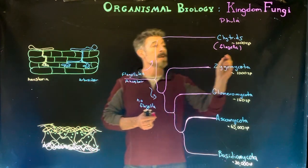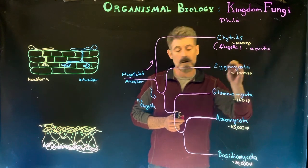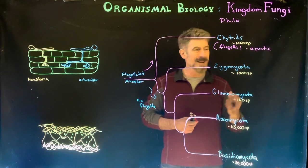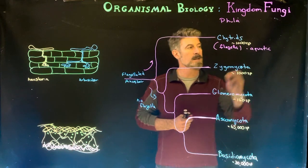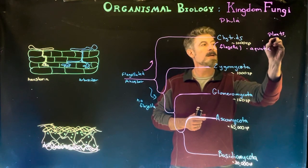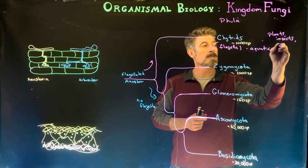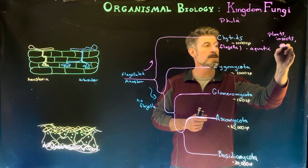The chytrids do. They are an aquatic group. They are typically considered pathogens and parasites in many cases of both plants, insects, and animals, amphibians, vertebrates.